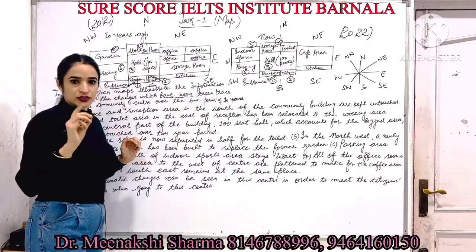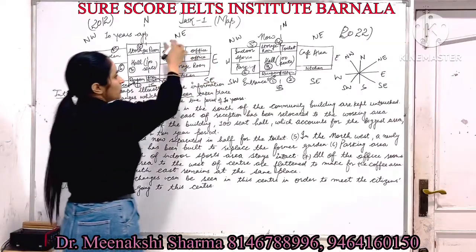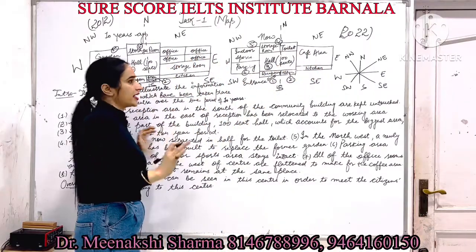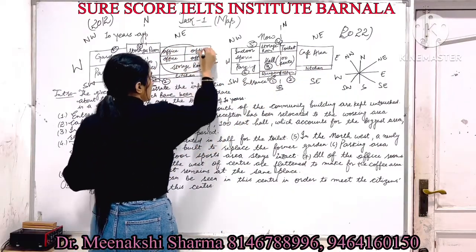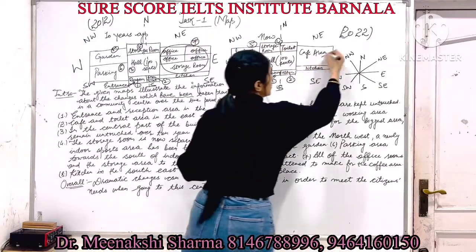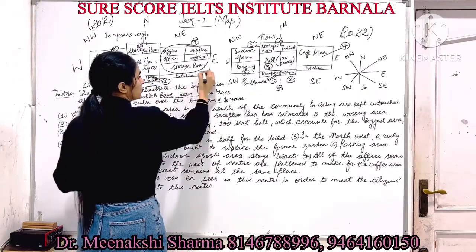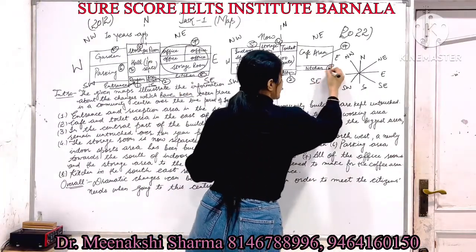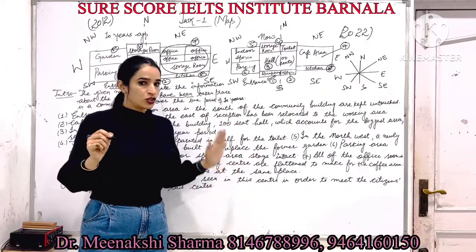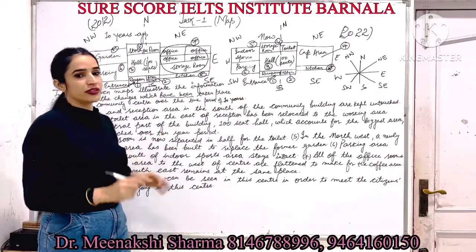Then we move to parking — parking stays. Then we move to the east side, which is all about the office and storage area. Instead of that, now we have the cafe area. And the last one is all about the kitchens. In total we will have only eight sentences. It's all about planning.